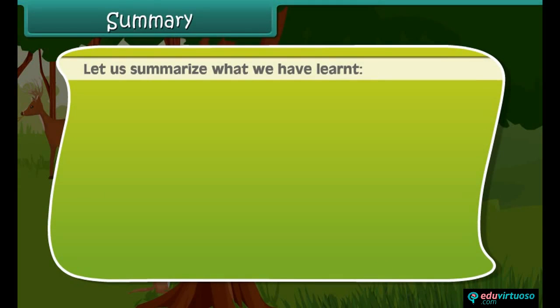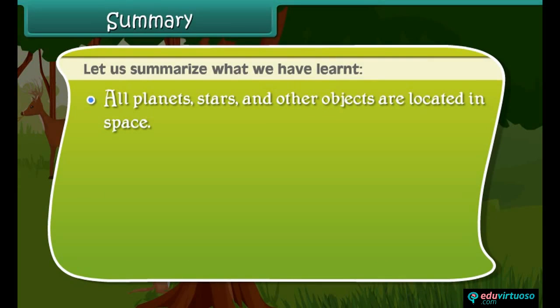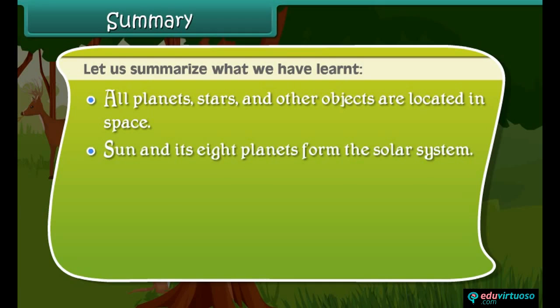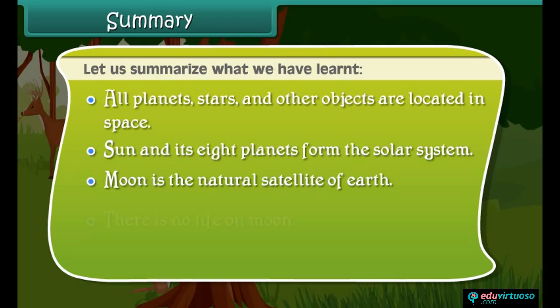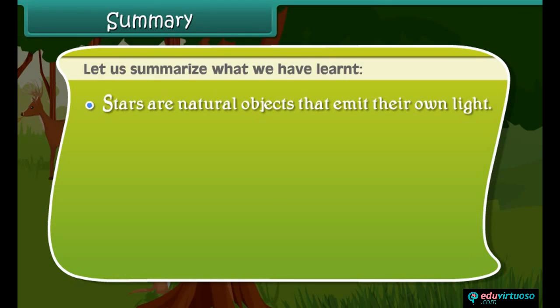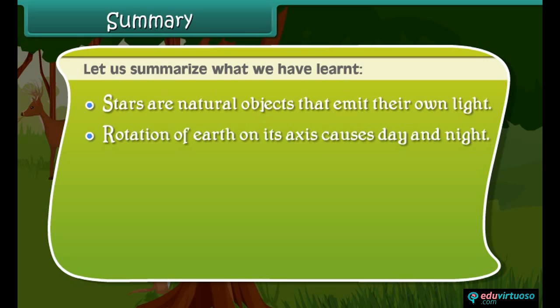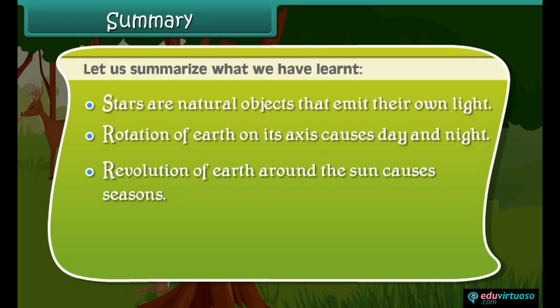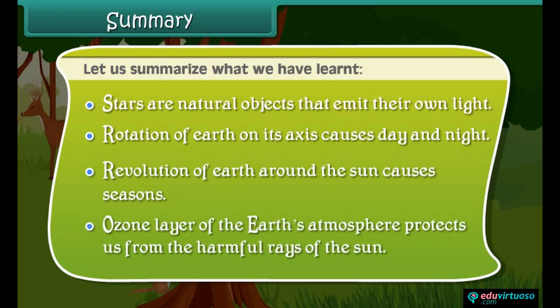Summary: all planets, stars, and other objects are located in space. The Sun and its eight planets form the solar system. The Moon is the natural satellite of Earth, and there is no life on the Moon. Neil Armstrong was the first man to land on the Moon. Stars are natural objects that emit their own light. Rotation of Earth on its axis causes day and night. Revolution of Earth around the Sun causes seasons. Earth's ozone layer protects us from the harmful rays of the Sun.